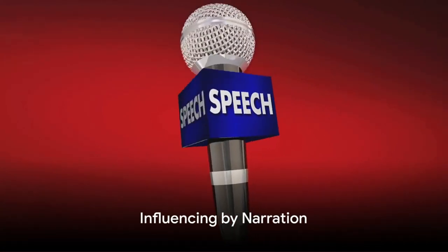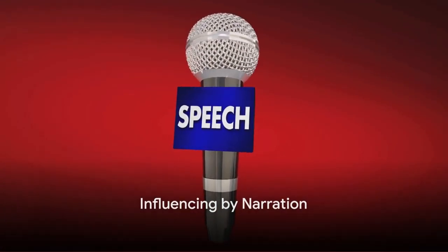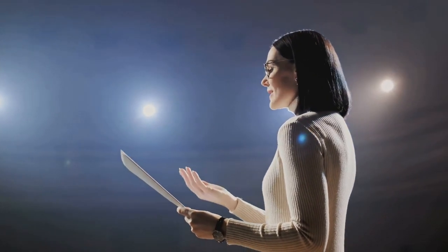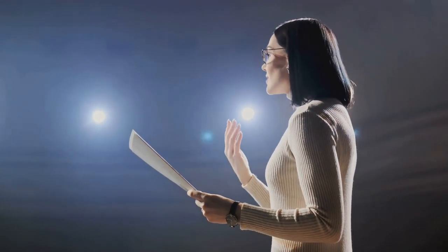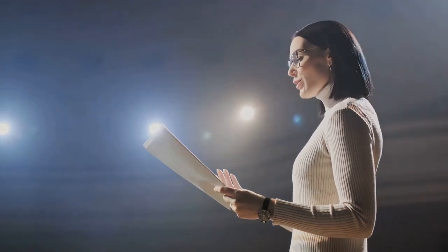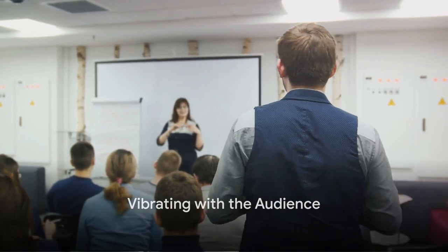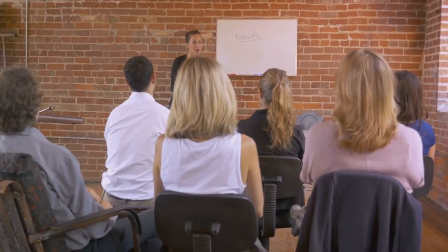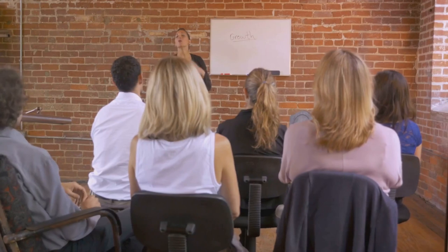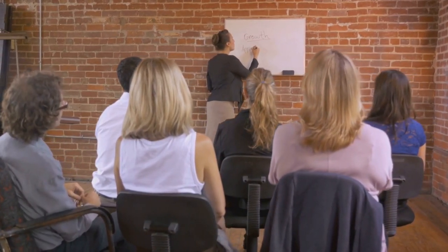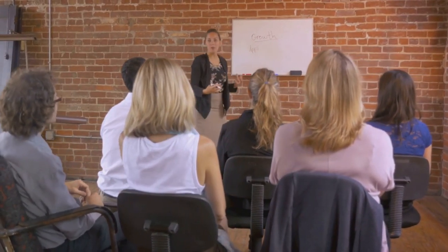The fifth chapter, Influencing by Narration, highlights the power of storytelling. Carnegie believes that stories can make a message more relatable and memorable. He encourages us to weave narratives into our speeches to capture the audience's attention. Chapter 6, Vibrating with the Audience, talks about connecting emotionally with our listeners. Carnegie teaches us that to truly engage an audience, we must tune into their emotions and reflect those feelings in our delivery.